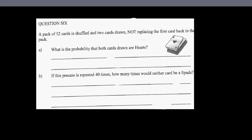A pack of 52 cards is shuffled and two cards are drawn, not replacing the first card back in the pack. What is the probability that both cards drawn are hearts? First we need to understand what the question is. You got a pack of 52 cards and you are taking one card out and then you're not replacing the card.